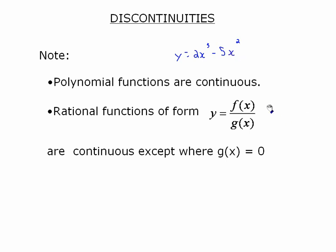f(x) over g(x), where both are polynomial functions. Some of you might think: what if the numerator is a radical? But two polynomials divided by each other is, by definition, a rational function. And of course, the denominator cannot be equal to 0 — so there's a built-in discontinuity right there.